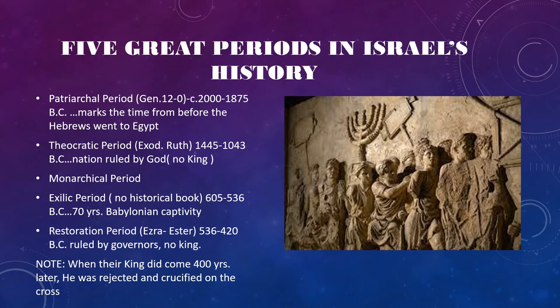The Monarchic period is when they had kings. Then the Exile period — there is no historical book during this time, but this is 70 years in Babylon. Then the Restoration period, represented by the book of Esther, with rule by governors and no king. However, when the King did come 400 years later, he was rejected and crucified on the cross.